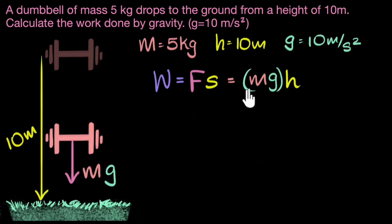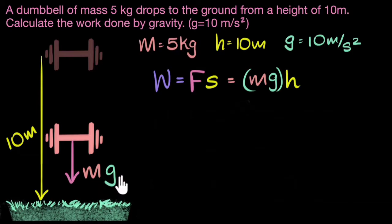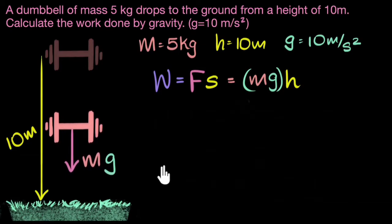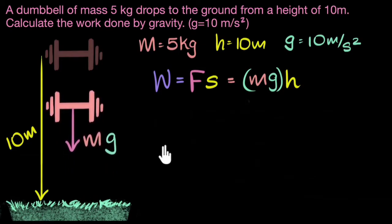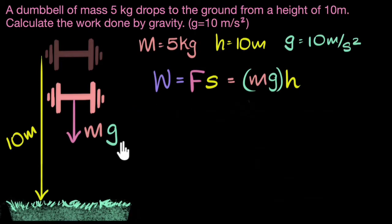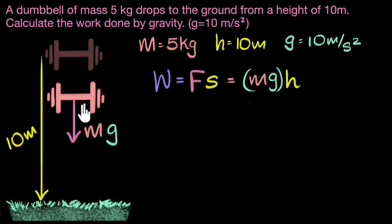Just think about what would have happened if I had thrown the dumbbell up. The force of gravity would still be acting downwards, but the dumbbell would be going upwards — the displacement would be in the opposite direction of the force of gravity. In that case, the work done would be negative. So if you throw the dumbbell up, gravity does negative work. But in our case, since the dumbbell is falling down, gravity is doing positive work.